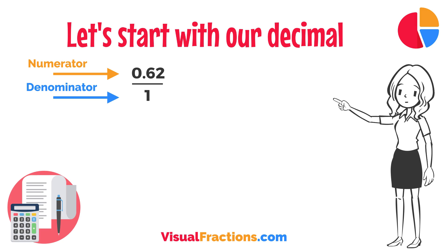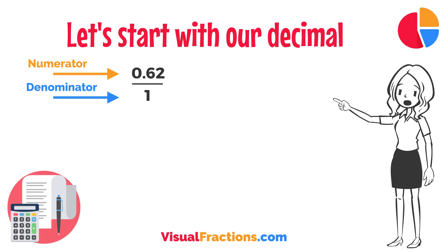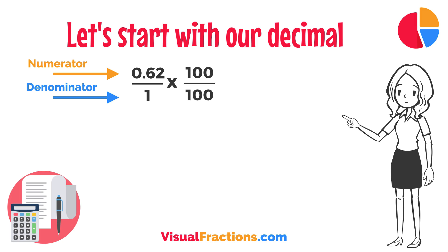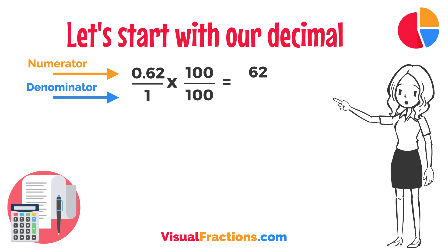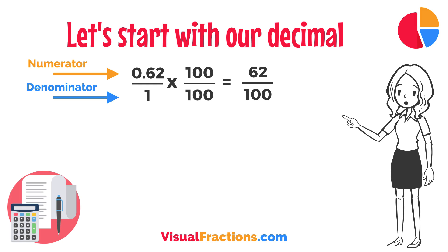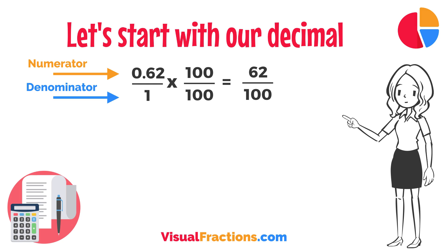This sets up the conversion process where we multiply both the numerator — the decimal — and the denominator, 1, by 100 because there are two decimal places. So 0.62 times 100 gives us 62, and 1 times 100 gives us 100. This translates 0.62 to the fraction 62 over 100.